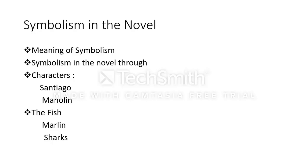اب symbolism in the novel through characters — یہ جو novel ہے 'The Old Man and the Sea'، اس میں symbolism مختلف طریقوں سے show کی گئی ہے۔ اس میں number one پہ characters ہیں: number one Santiago اور number two Manolin۔ یہ دو prominent اور central main characters ہیں، اور ان characters کے ذریعے بھی symbolism کا element سامنے لایا گیا ہے۔